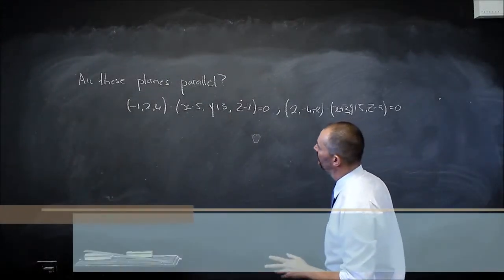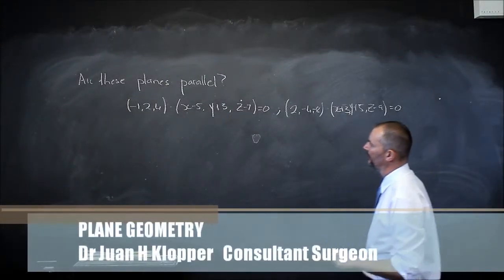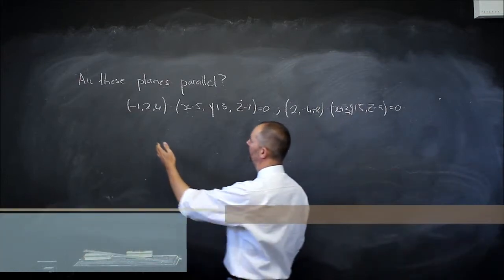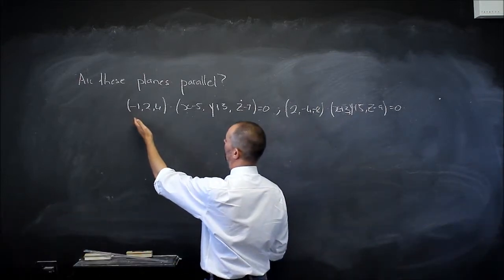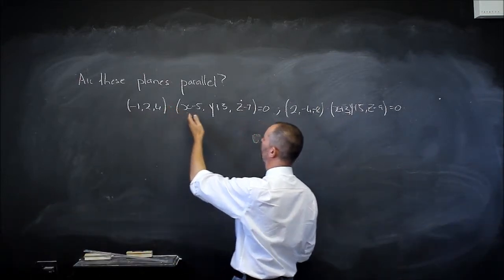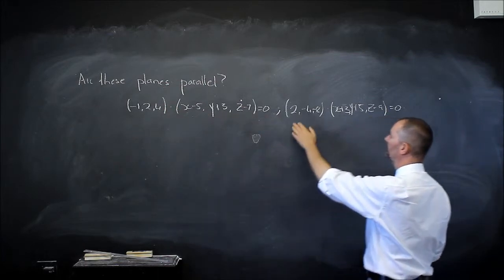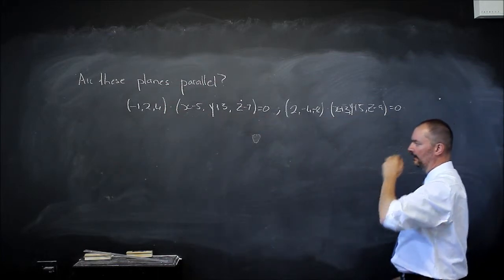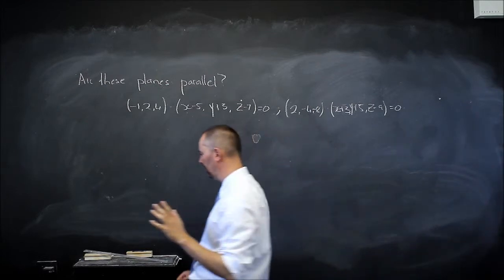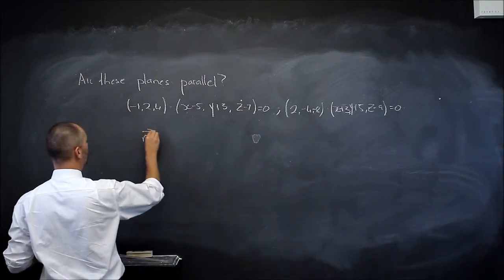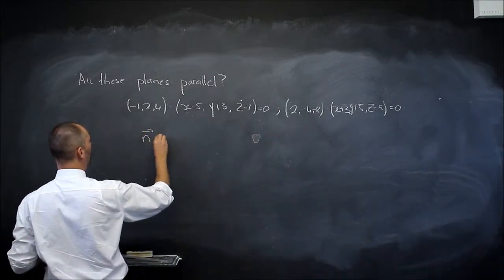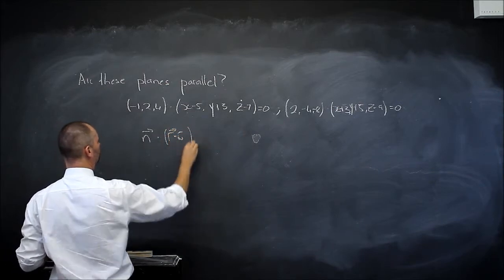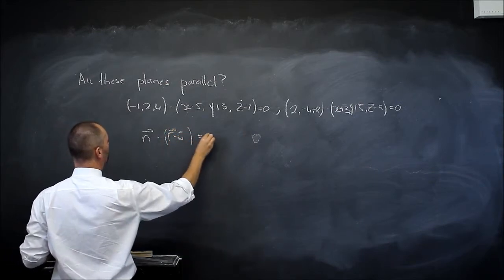In this problem we want to know if these two planes are parallel. We have the equations of the planes in vector form: (-1, 2, 4) dot product equals 0, and (2, -4, -8) dot product equals that. Remember, the vector form is vector n dot product vector r minus r₀ equals zero.